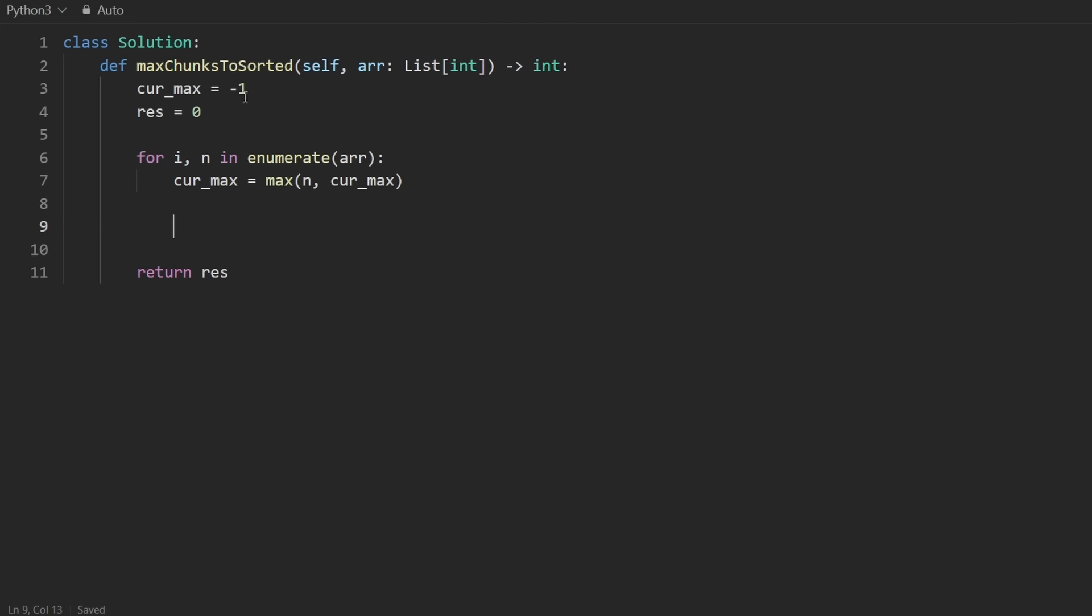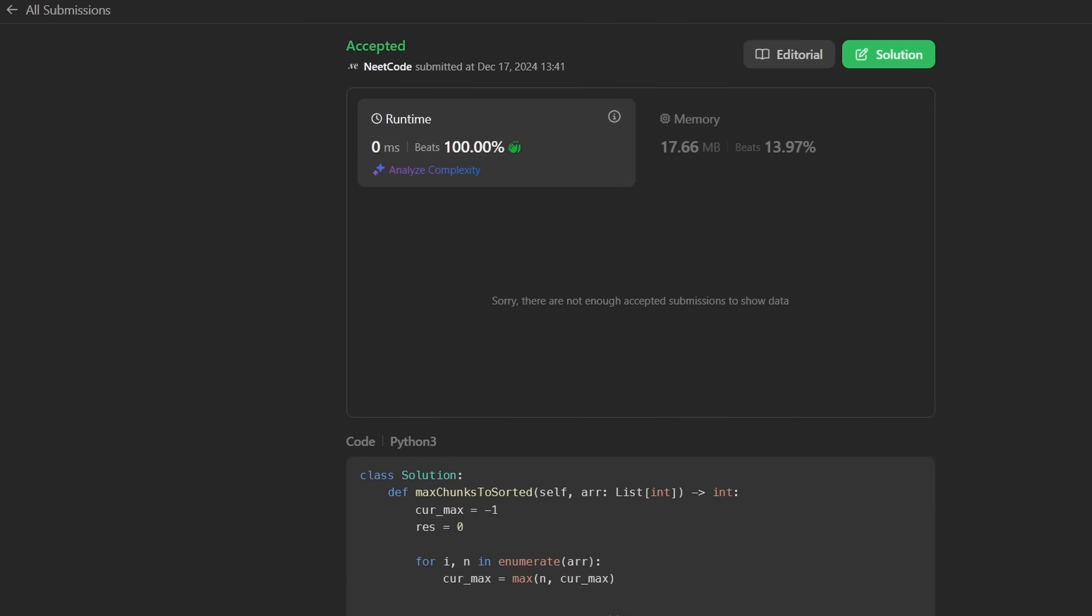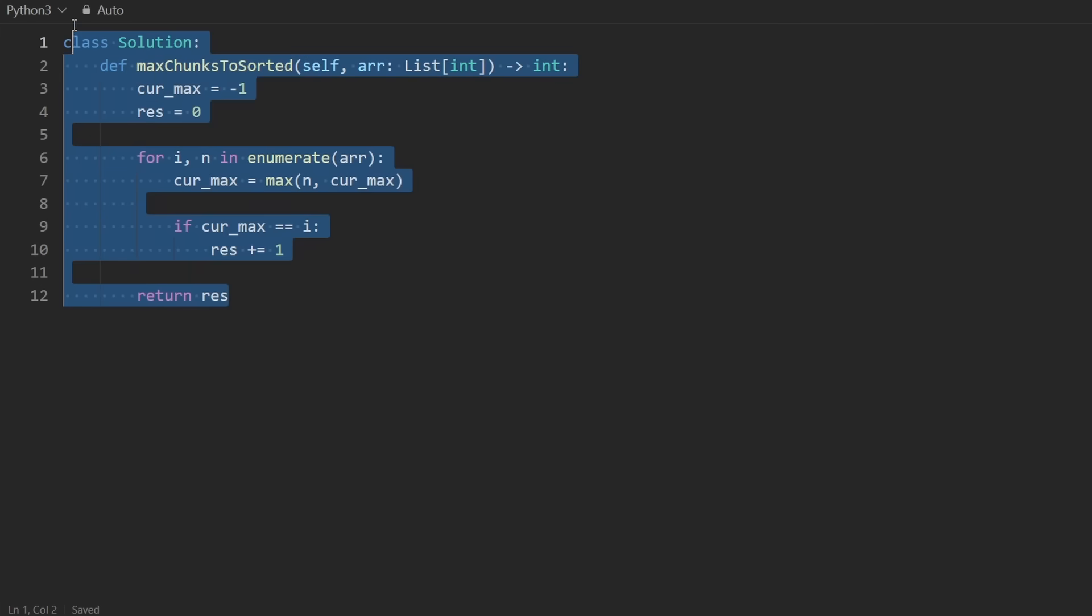And now the problem is as easy as just saying, if the current max is equal to the index, increment the result by one. Let's run it. And it looks like it works. I'm pretty sure it's efficient, at least in terms of big O. And I think the code is as clean as you can get it. I mean, I'm sure some of you can put this into a one liner or something. But in terms of interviews, I think this is a sufficient solution. Thanks for watching and I'll see you soon.